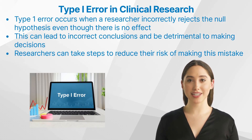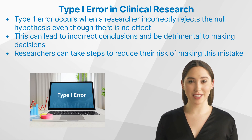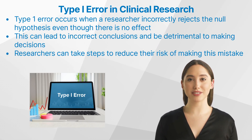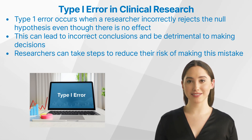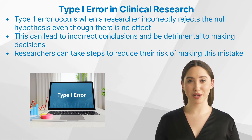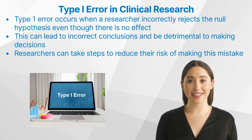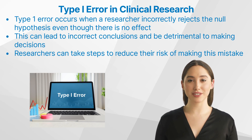In conclusion, type 1 error occurs when a researcher incorrectly rejects the null hypothesis even though there is no effect. This can lead to incorrect conclusions and be detrimental to making decisions about treatments, therapies, or interventions. Researchers can reduce their risk of making this mistake by pre-testing, conducting replication studies, and understanding bias and confounding variables. Understanding type 1 error is essential for conducting valid and reliable clinical research studies.